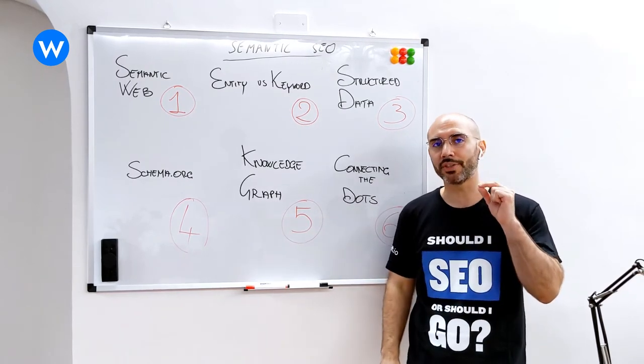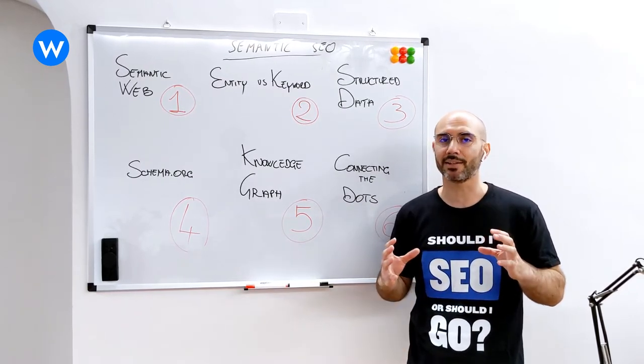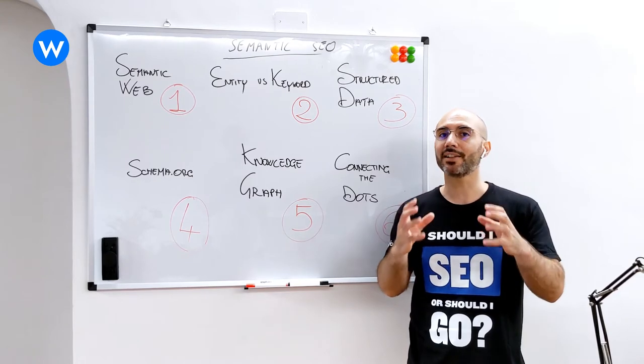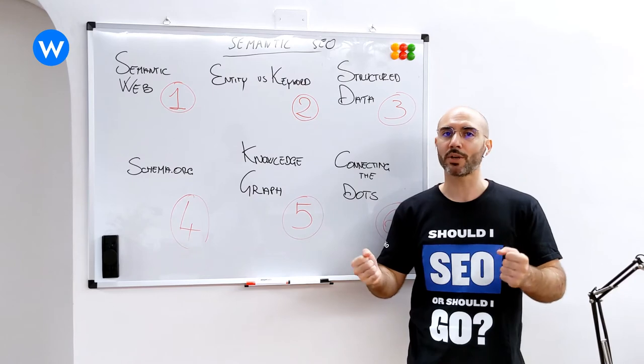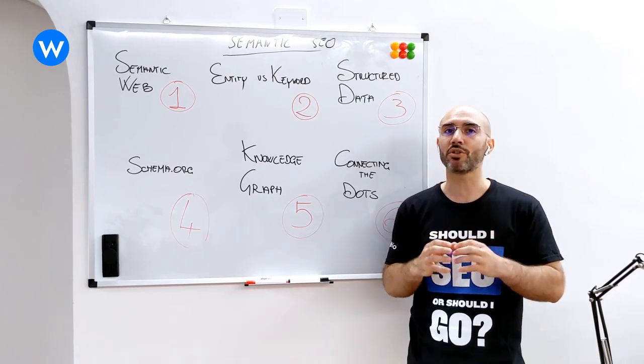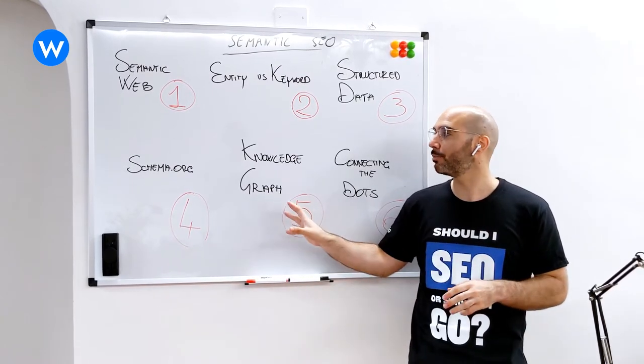Also, knowledge graph is very important because this is a massive dataset that can be queried at any time by search engines or by any other machine to actually retrieve and find information of any sort. That's why it's important.